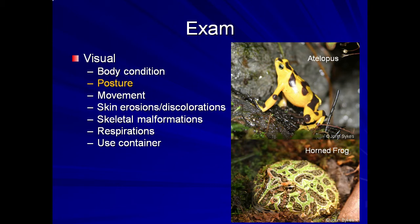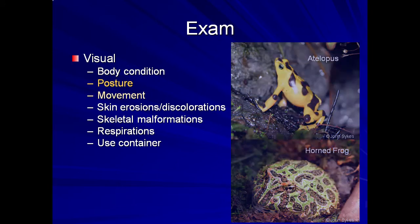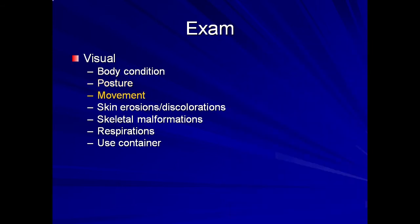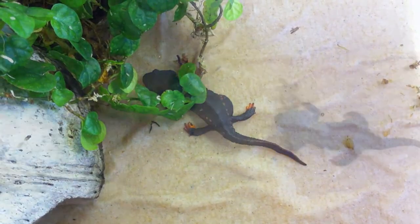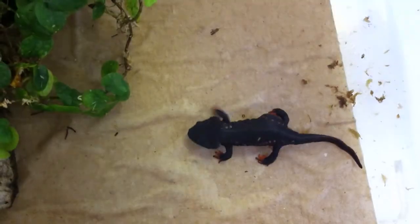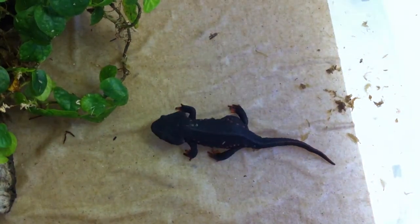For example, as shown, both of these frogs are in a body position normal for their species. However, if this Atelopus species were hunkered down like the horned frog pictured here, it may indicate the environment is too dry. Alternatively, if the horned frog were standing up and alert, it may indicate the animal is uncomfortable. Movement should be evaluated when possible. In this video, it is apparent that the newt is having difficulty using its rear legs, which may be a sign of trauma or problems with calcium metabolism — something that may not be noticed if the visual exam were skipped.